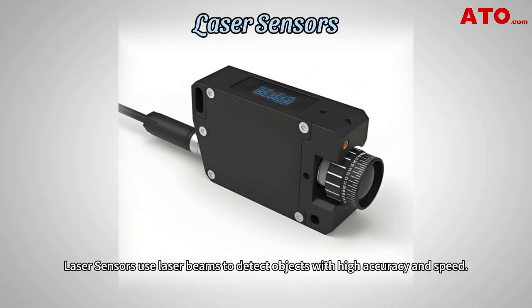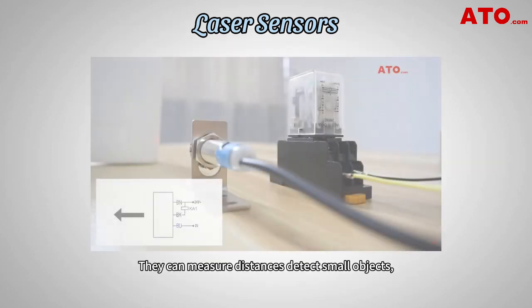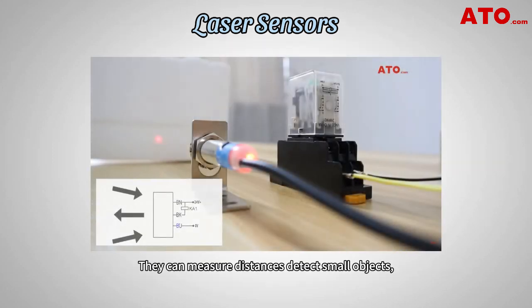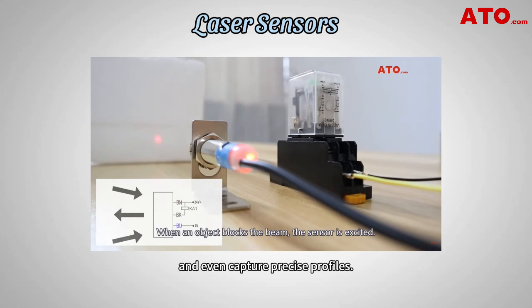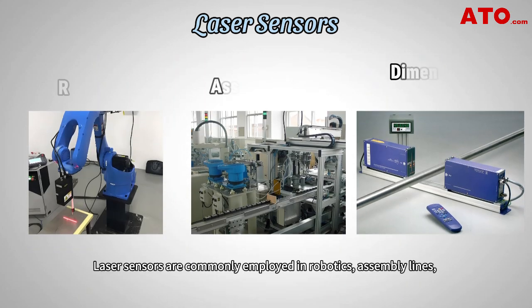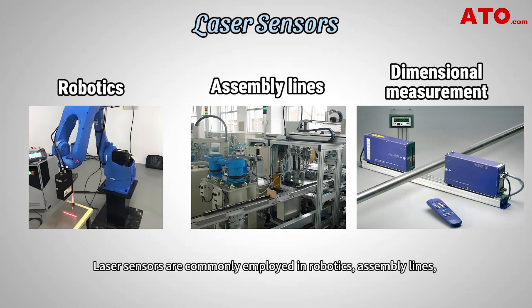Laser sensors use laser beams to detect objects with high accuracy and speed. They can measure distances, detect small objects and even capture precise profiles. Laser sensors are commonly employed in robotics, assembly lines and dimensional measurement tasks.